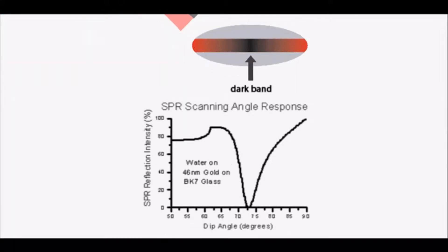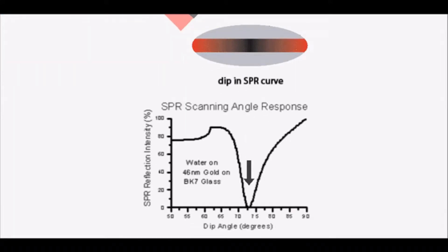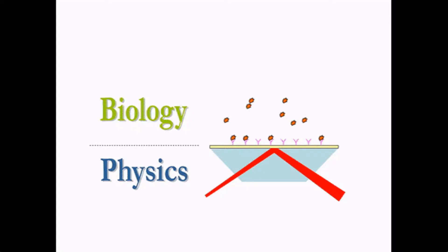Shape and location of SPR dip can then be used to convey information about the sensor surface. Now, let us see the working of SPR Biodetectors.